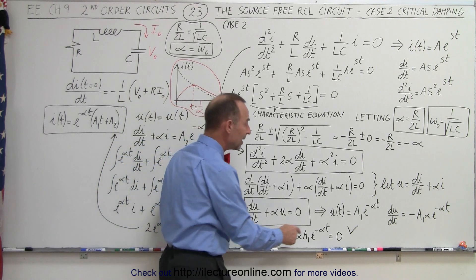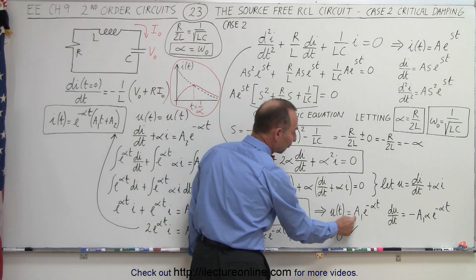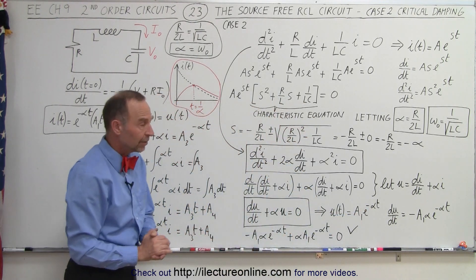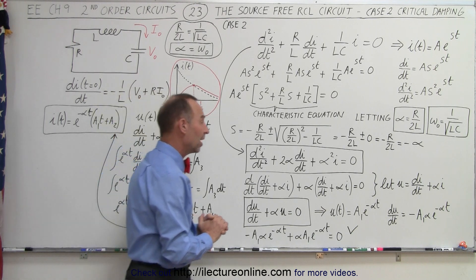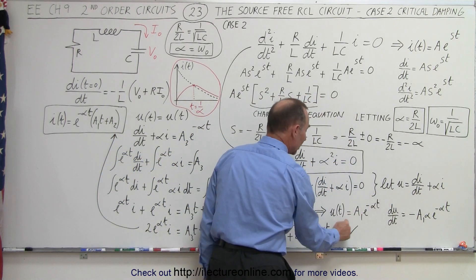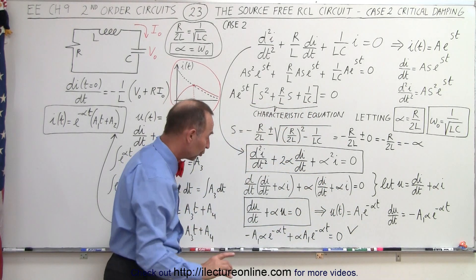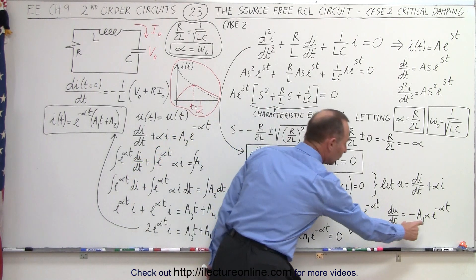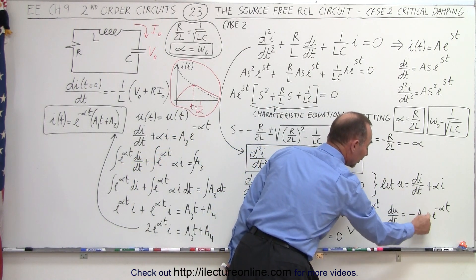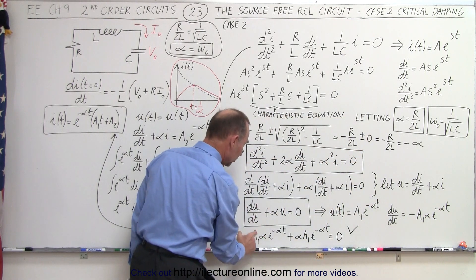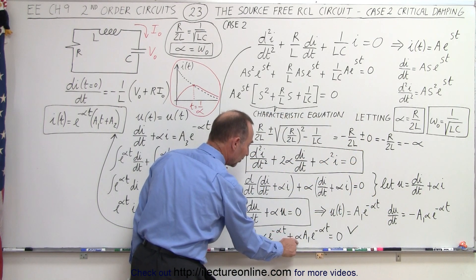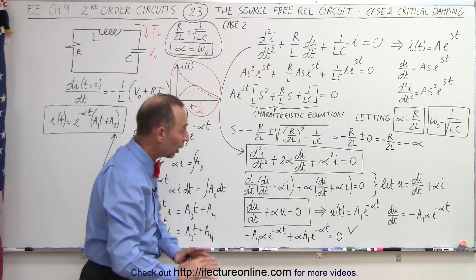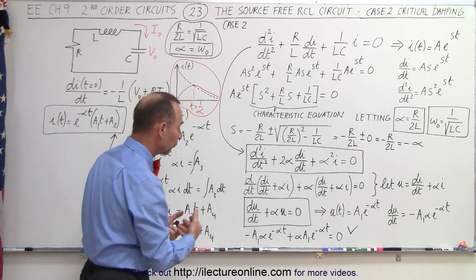We can claim that the general solution of u is in the form A₁ times e to the minus alpha t. Now we're going to say that u equals this and u equals this. To verify this equation is correct, notice that du/dt can be written from this form. If u equals A₁e^(-αt), then du/dt gives us the derivative, and we can replace du/dt accordingly. This does indeed add to zero, confirming the general solution for u is correct.